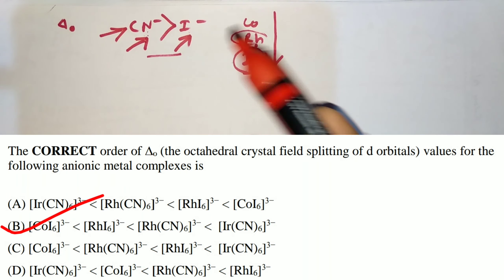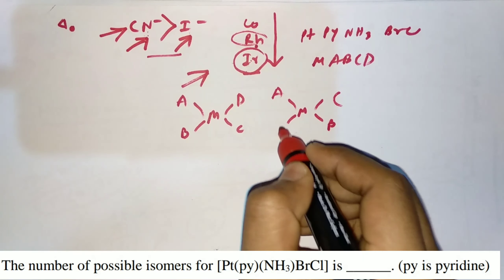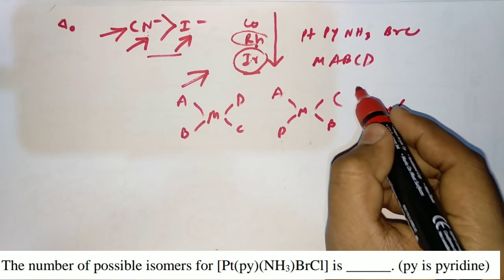The next question asks for the number of possible isomers for Pt(py)(NH3)(Br)(Cl) — an M(abcd) square planar system. Three different geometrical isomers are possible. The final question in this section asks you to calculate ΔO and convert it to wavelength λmax in nanometers — this is homework based on the same method as shown earlier.